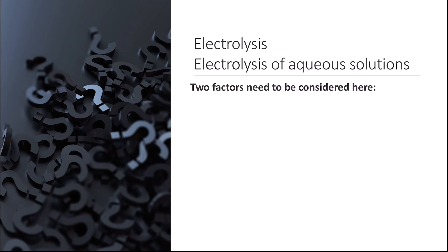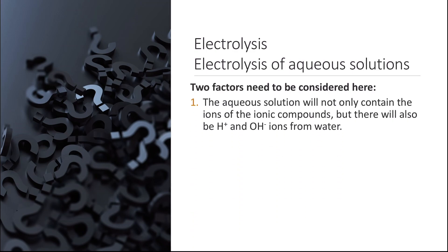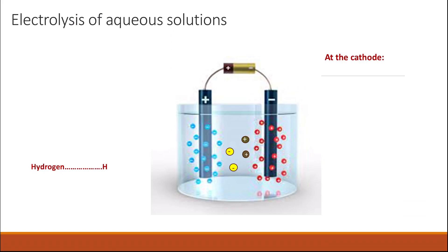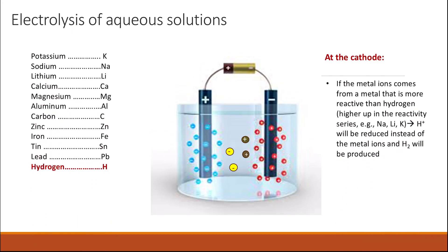For electrolysis of aqueous solution, two things must be considered. In aqueous solution, we don't only have ions from the salt — we also have hydrogen and hydroxide ions from water. This means two different negatively charged species and two different positively charged species compete for oxidation and reduction at the anode and cathode. At the cathode: if the metal ion comes from a metal more reactive than hydrogen (like sodium, lithium, or potassium), then hydrogen is reduced instead of the metal ion.